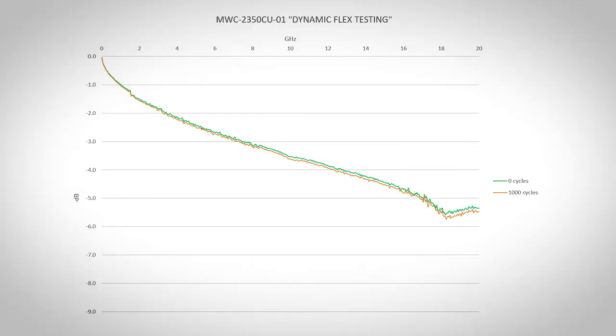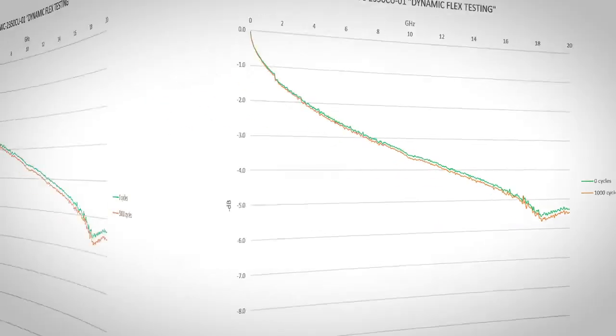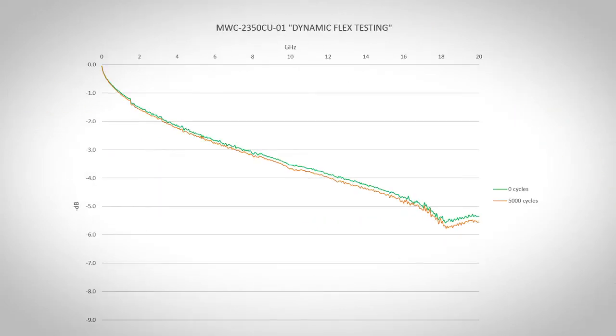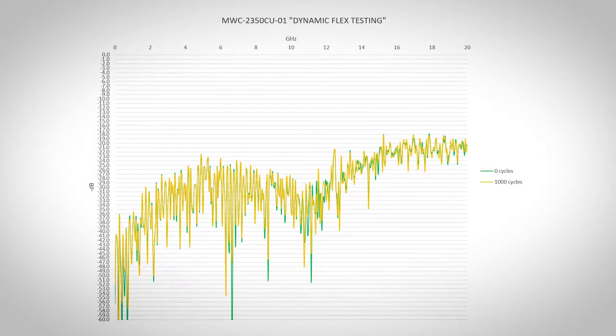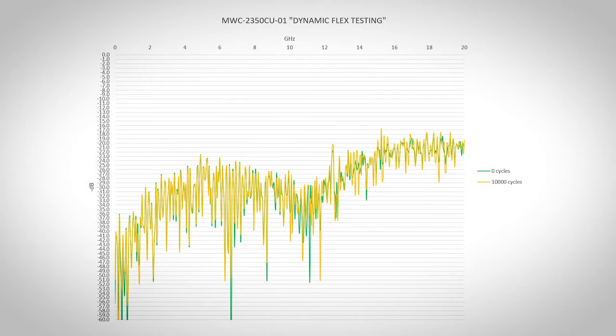This plot compares the insertion loss results after 1,000 cycles, and now we're looking at insertion loss after 5,000, and this is after 10,000 cycles. This plot compares the return loss after 1,000 cycles, this is after 5,000 cycles, and again, here's return loss after 10,000 cycles.